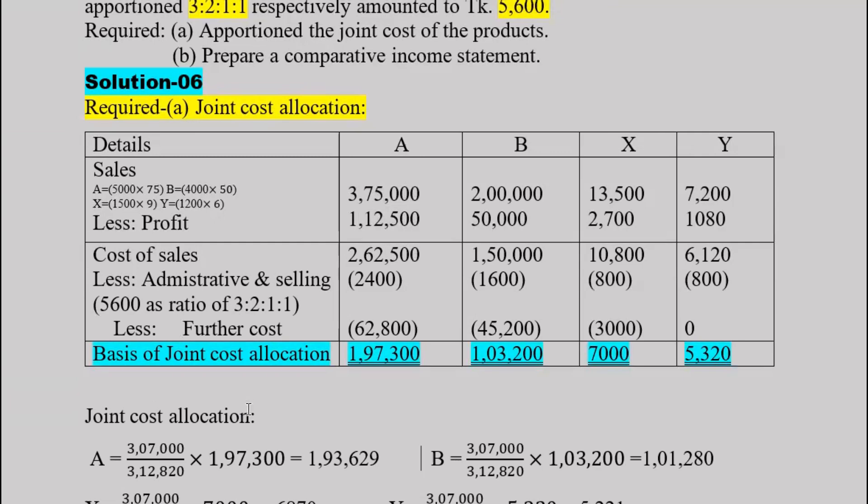The basis of joint cost allocation is now established. The basis of joint cost allocation is reviewed to determine how the total joint cost will be apportioned across the main products and by-products.